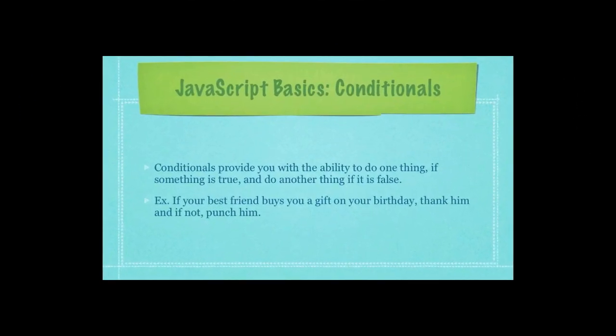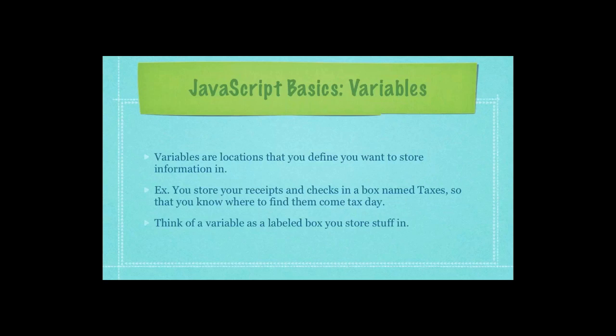Then we have conditionals. Conditionals provide you with the ability to do one thing if something is true, and do another thing if it is false. For example, if your friend buys you a gift on your birthday, you would thank him. If your friend did not, you would punch him. There's a conditional. Variables are simply locations that you define you want to store information in. For example, you store your receipts and checks in a box named Taxes so that you know where to find them come tax day. Think of a variable as a labeled box you store stuff in.